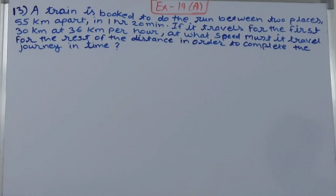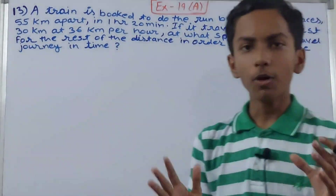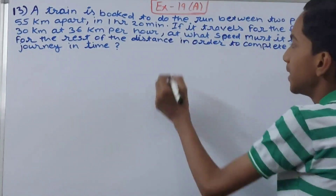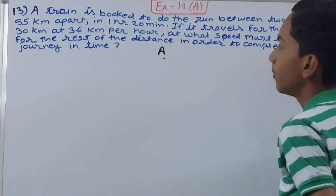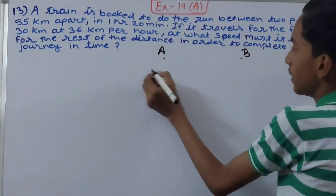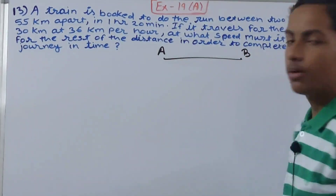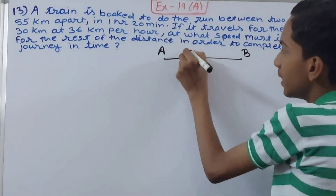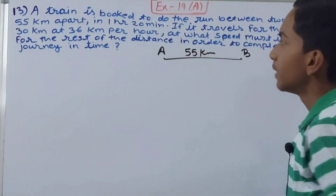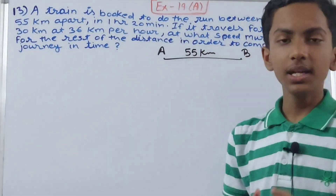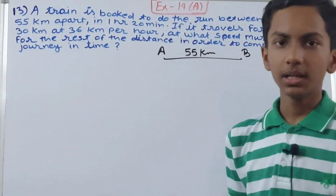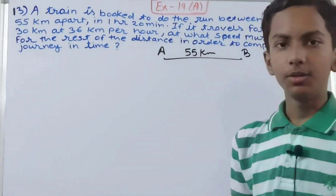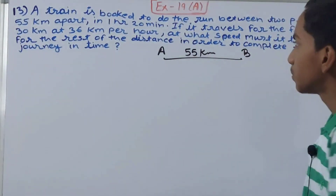The question is: a train is booked to do the run between two places 55 kilometers apart in one hour 20 minutes. So the train has to go from place A to place B. The distance between A and B is 55 kilometers, and the time limit is one hour 20 minutes.